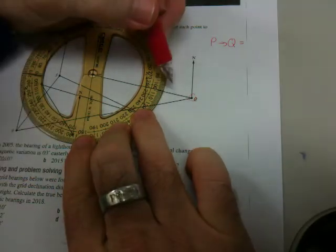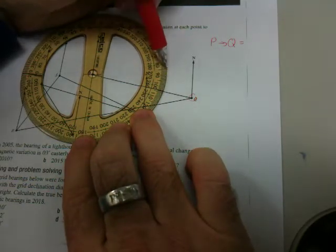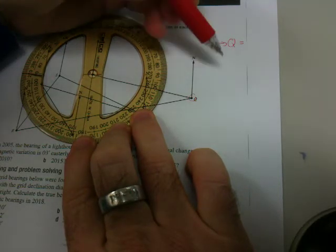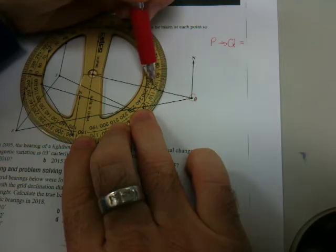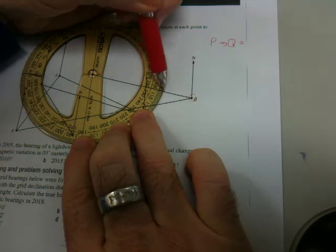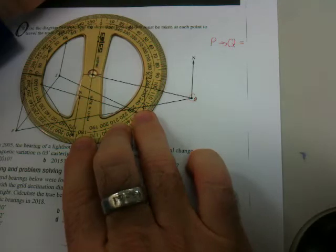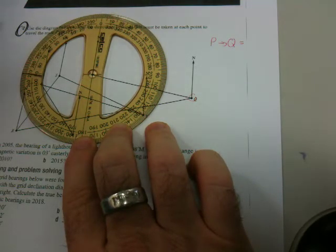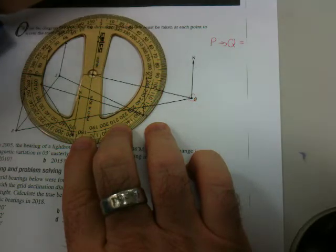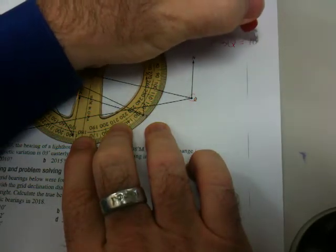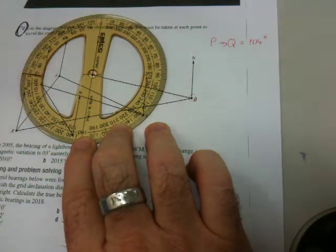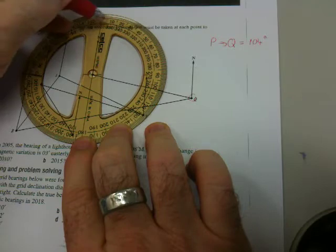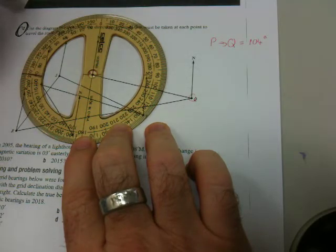Look down on the protractor here, there is 90 there, so we have 100, 110, a bit more than 100. Looks like it's about 104 degrees. So from north all the way around to heading Q, we're travelling 104 degrees.